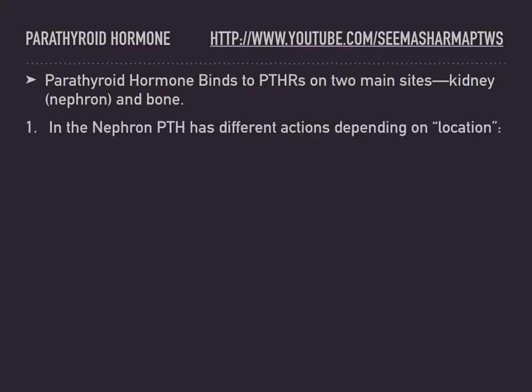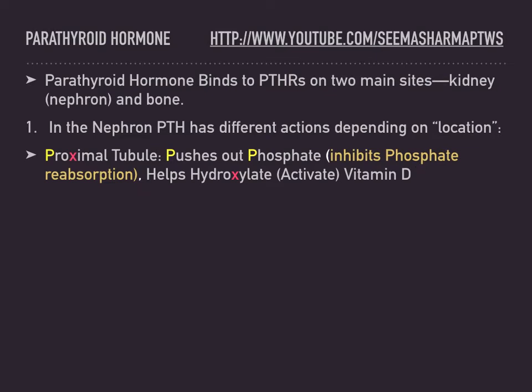In the nephron, PTH has different actions depending on location. One location is the proximal tubule. In the proximal tubule, PTH inhibits phosphate reabsorption and also helps hydroxylate or activate vitamin D. The P in proximal tubule helps remember that it pushes out phosphate, and the X in proximal helps remember that hydroxylation of vitamin D occurs here.